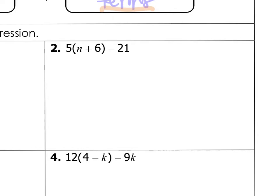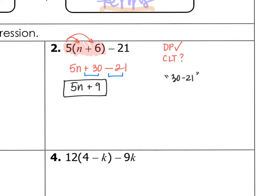Alright, so let's try number 2. We have the distributive property right here. So, we have to take care of that first. 5 times n, which is 5n, plus 5 times 6, which is 30. Bring down the minus 21. So, we took care of the distributive property. Now, we check to see, do we have any like terms to combine? We do. We have like constants of plus 30 and minus 21. So, that's 5n plus 9 because 30 minus 21 is 9. We can't do anything else because 5n and 9 are not like terms.